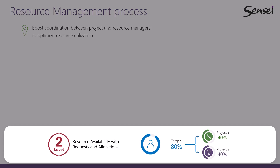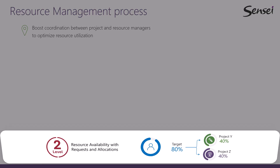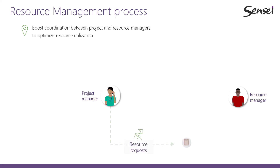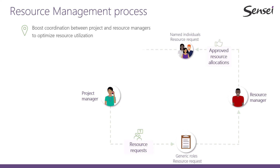Resource management level 2 follows a process that's quite similar to your project budgeting process. The project manager will submit a request for resources needed for the project — often referred to as a resource budget or resource plan. Ideally, the request is for generic roles as opposed to named individuals. If the project is approved, the resource manager or line manager will then select the named individuals to work on the project at an approved allocation level. Then, the project manager can assign tasks to those individuals in the work management tool, staying within the approved allocation level, of course.